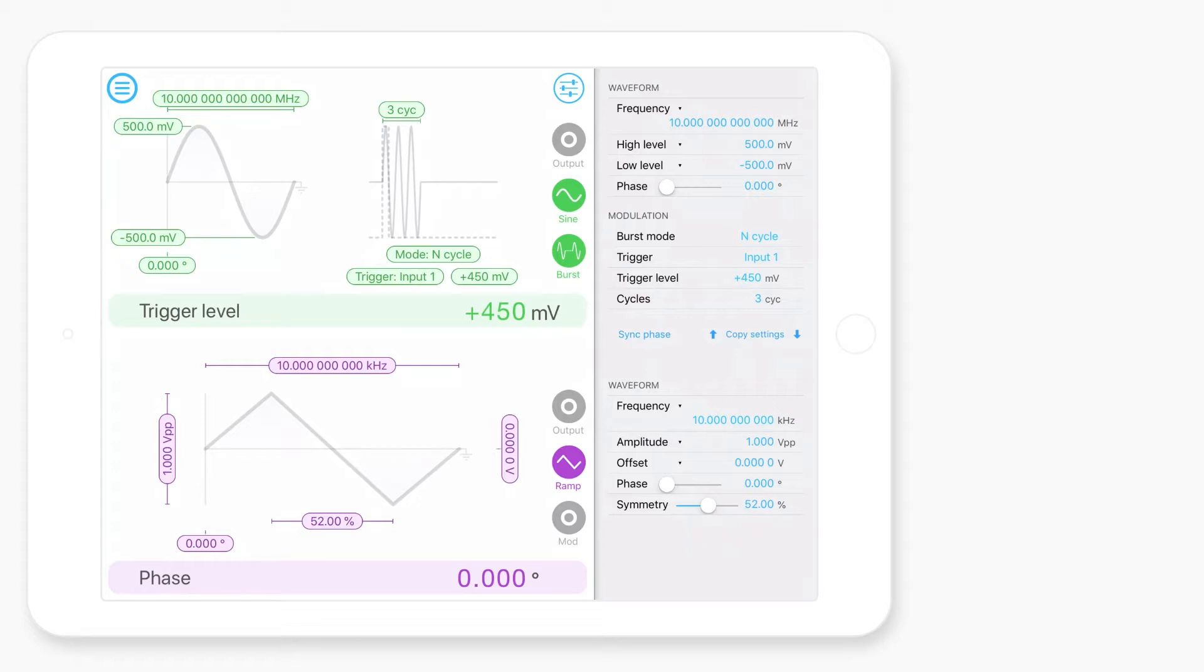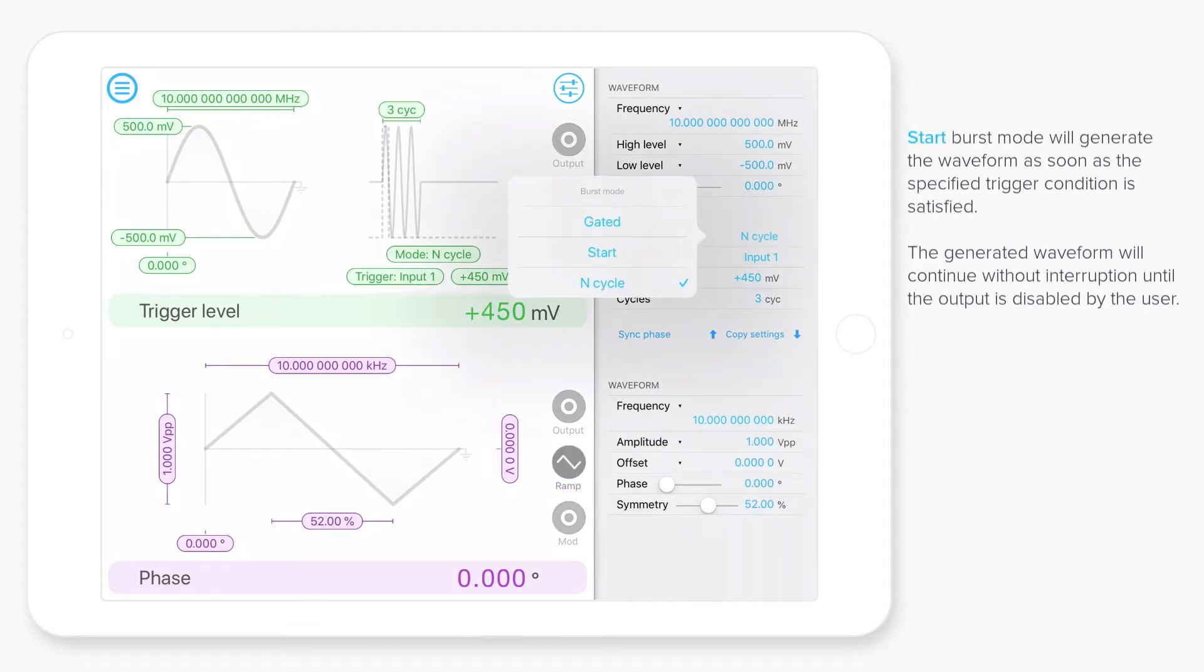The next mode is start mode. This is pretty self-explanatory. Basically, the output signal will start and will not end once a trigger event occurs. Again, it's useful to use input one as the external trigger input for this, because it allows you to set the trigger level quite accurately.